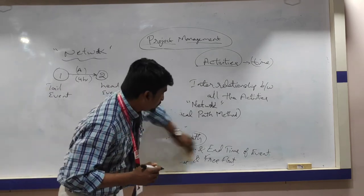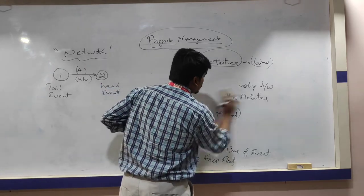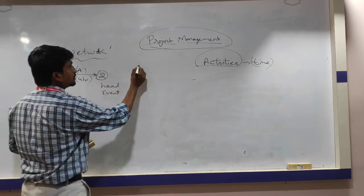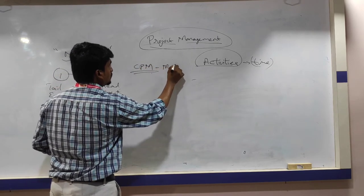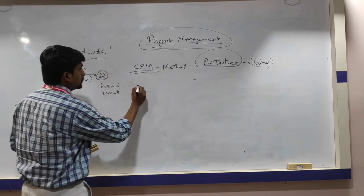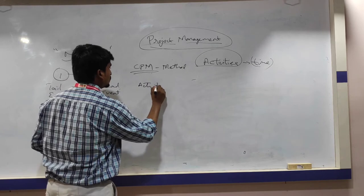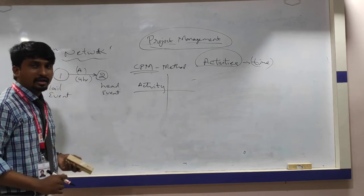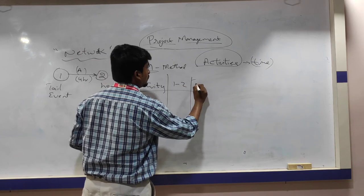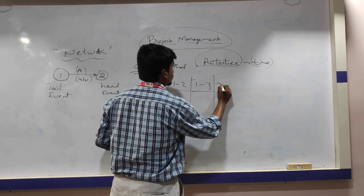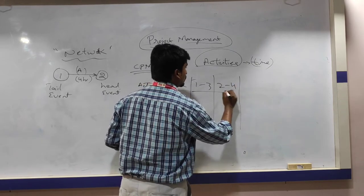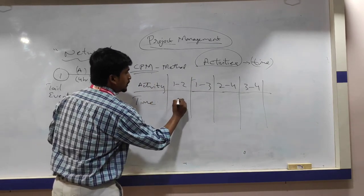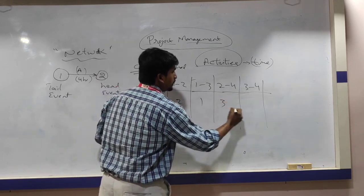Let me illustrate the CPM method with an example. Consider activities with tail-to-head events: 1 to 2, 1 to 3, 2 to 4, and 3 to 4. The durations are: activity 1-2 takes 2 days, activity 1-3 takes 1 day, activity 2-4 takes 3 days, and activity 3-4 takes 2 days.